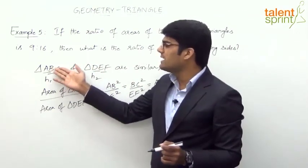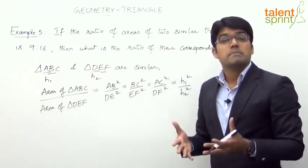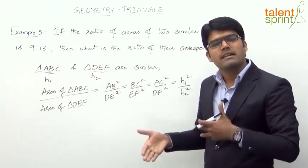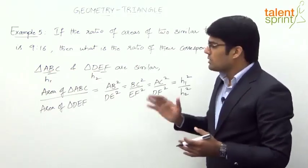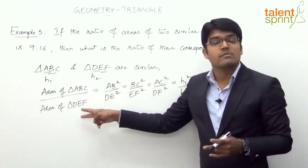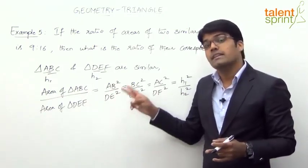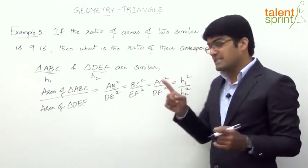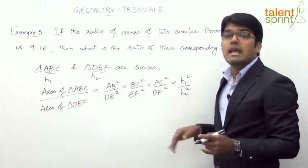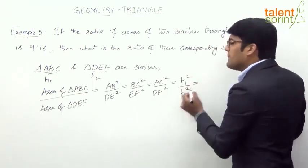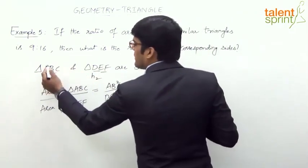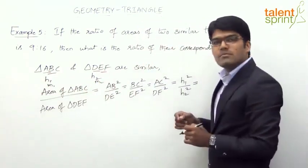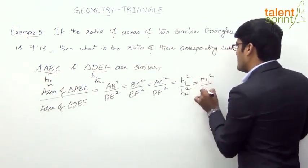The same applies to medians as well. If the median in triangle ABC is AM and the corresponding median in triangle DEF is DX, then AM squared by DX squared will also be equal to the ratio of the areas. So if the median lengths are M1 and M2 respectively, then M1 squared by M2 squared equals the ratio of the areas.